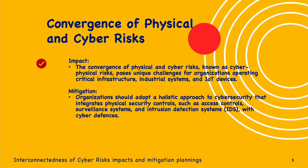Cyber-physical systems (CPS) are interconnected systems that integrate physical components with digital control systems — examples include industrial control systems (ICS), smart buildings, and autonomous vehicles. IoT devices such as smart cameras, sensors, and connected appliances are vulnerable to cyber attacks that can compromise physical security, disrupt operations, and steal sensitive data. Supply chain attacks targeting physical or software components can have both physical and cyber impacts, affecting product integrity and safety. Insider threats can involve employees with access to both physical assets and digital systems, posing risks such as theft, sabotage, or unauthorized access.